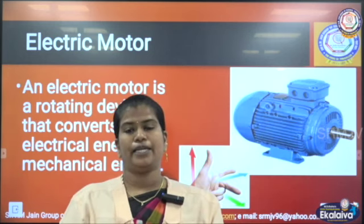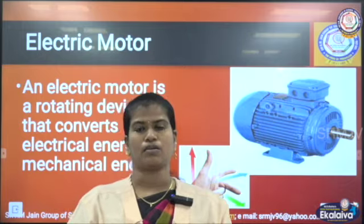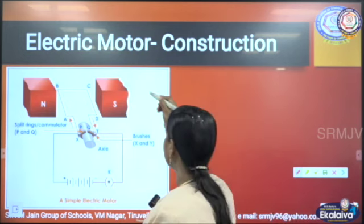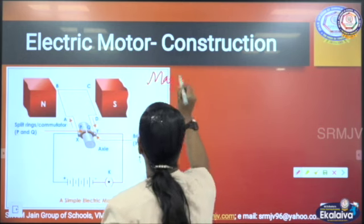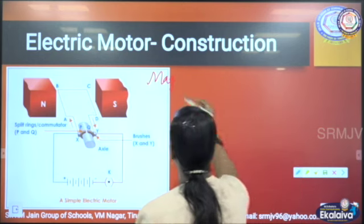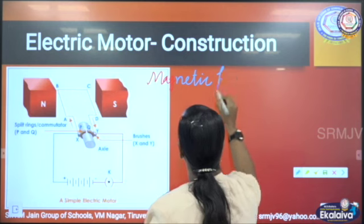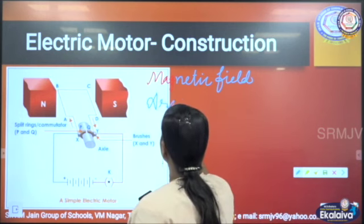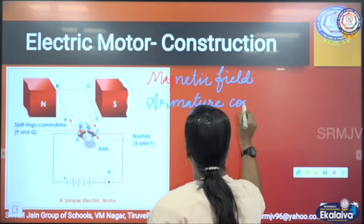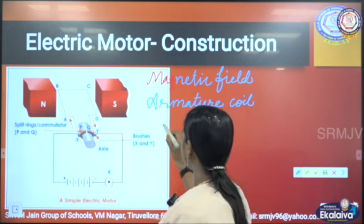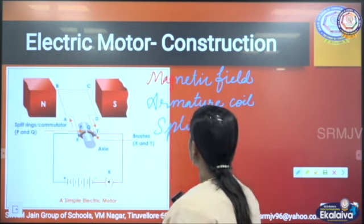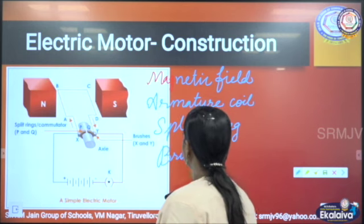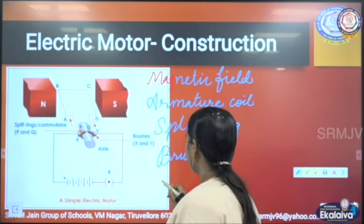Now let me explain the construction of a simple electric motor. To construct a simple electric motor, we need certain things. The very first thing is we need a magnetic field and we need an armature coil. Then we need a split ring, then brushes, and at last we need an electric source, that is a battery.